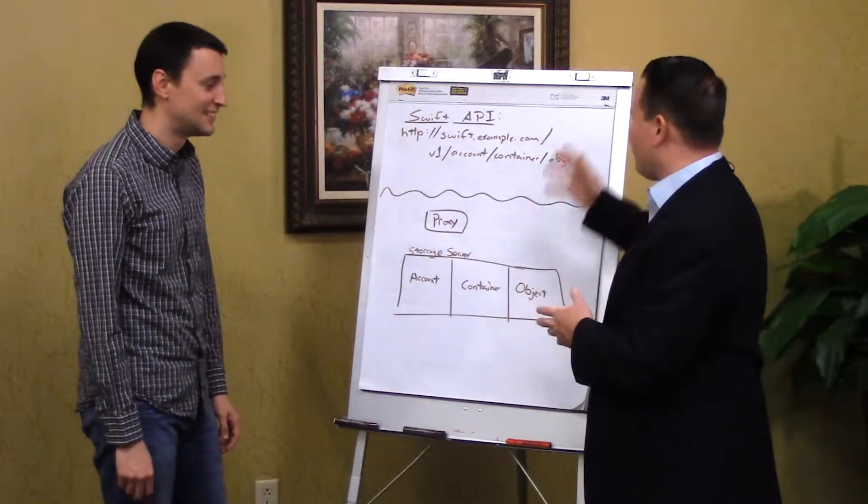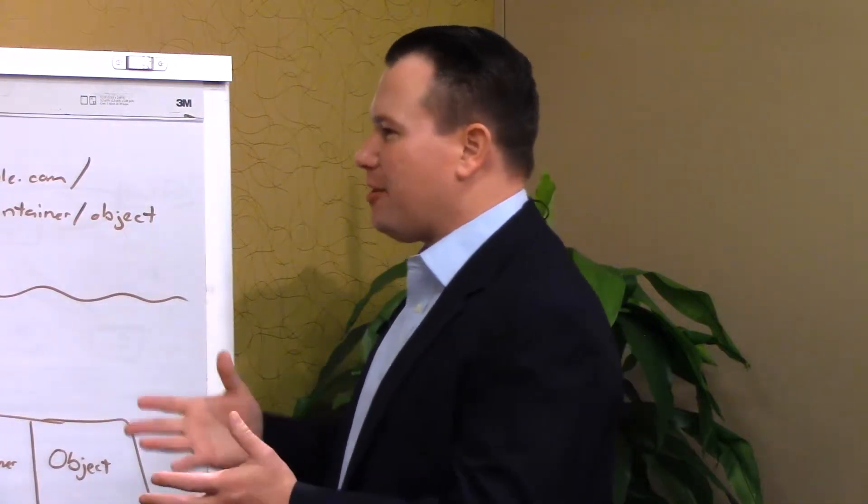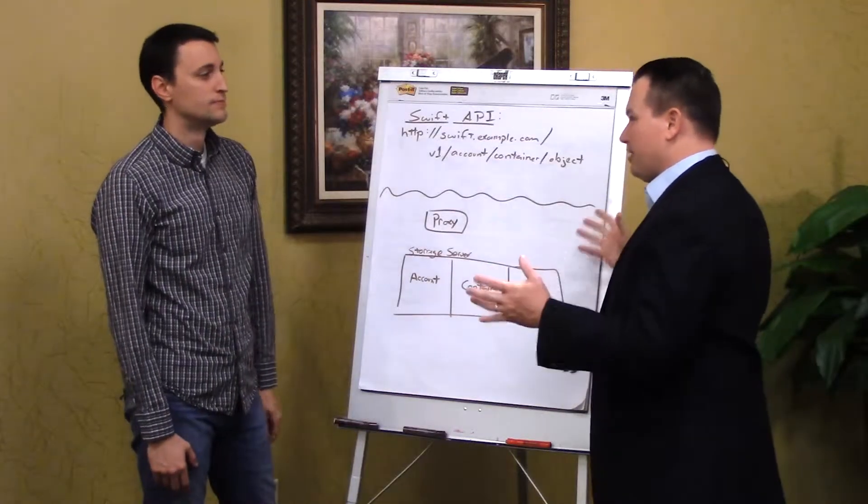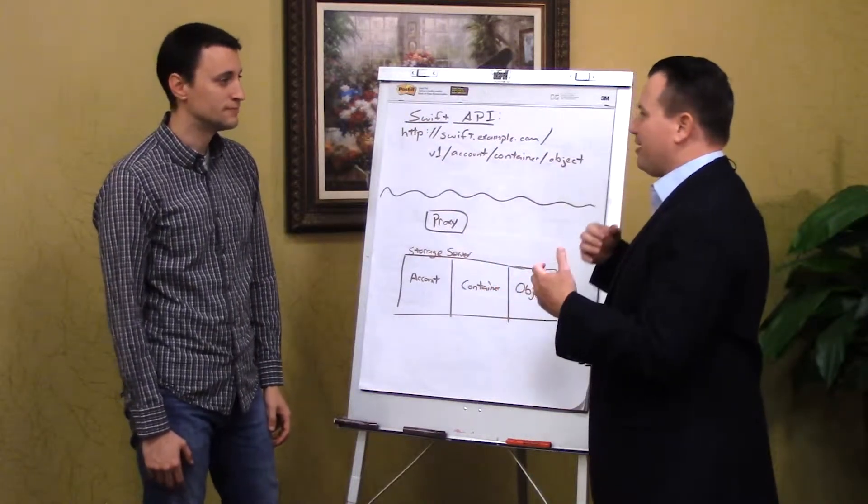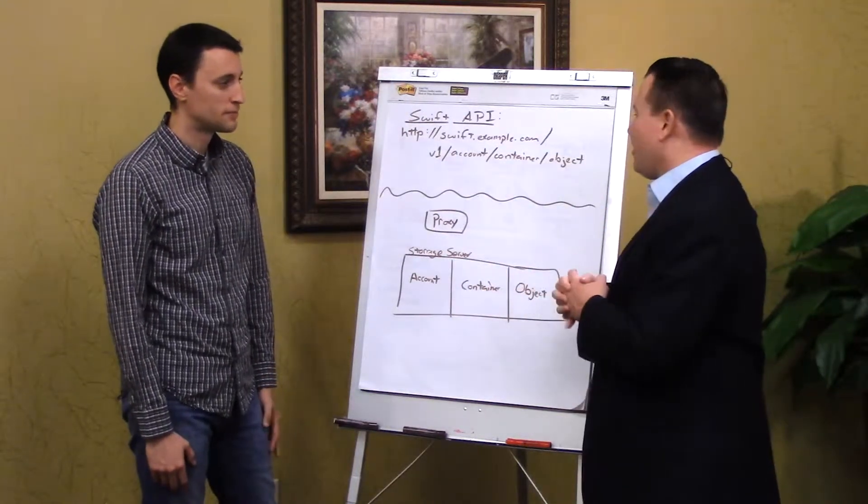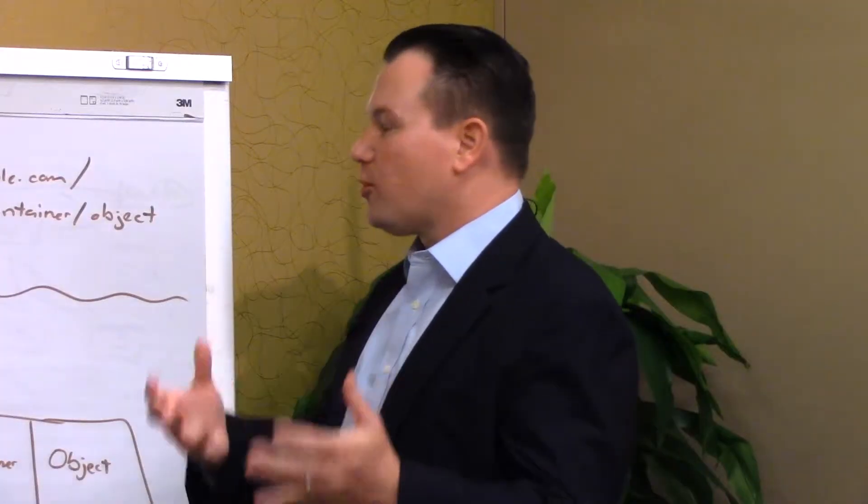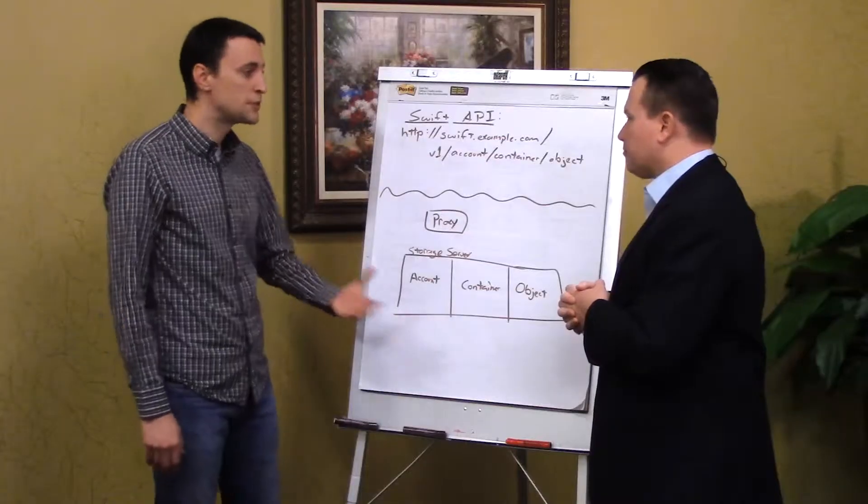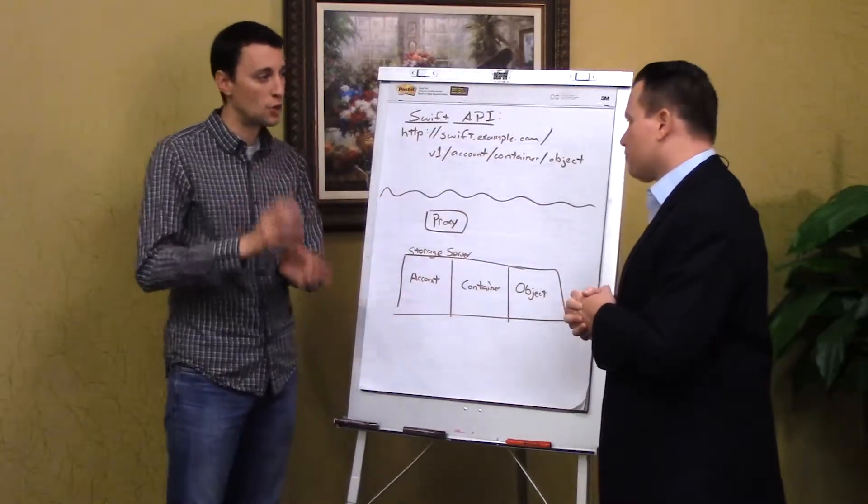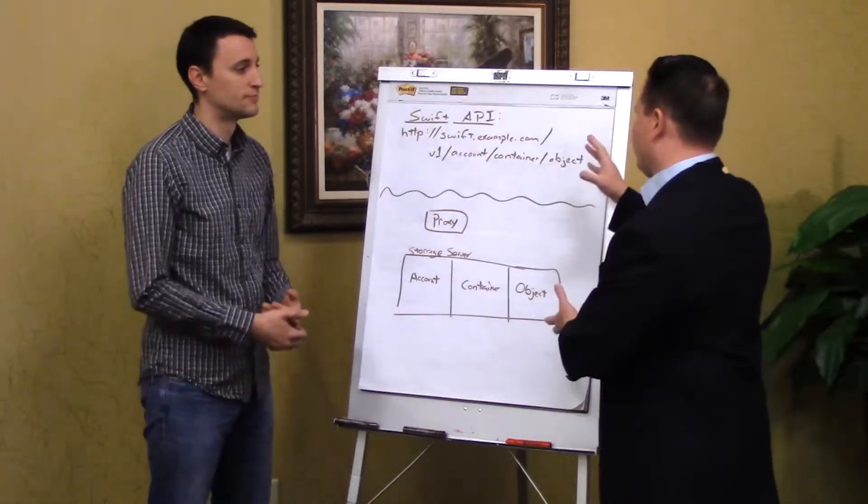So first off, we want to talk about the Swift API. In a previous segment, we talked about Swift in general, an open source project. It's an object store. And SwiftStack, you guys have created a commercial implementation of the Swift object store. Yeah, a management control plane that comes alongside the OpenStack Swift storage engine.